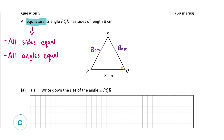Now let's have a look at part A1, where we're asked to write down the size of the angle PQR, which is this angle right here. As I've just written on the screen, all sides equal, all angles equal. We know that in any triangle there's always 180 degrees, so we have to work out how many degrees is in each angle. Since it's equilateral, they'll all be the same, so we simply divide 180 by 3, which equals 60 degrees. So the angle PQR is 60 degrees.